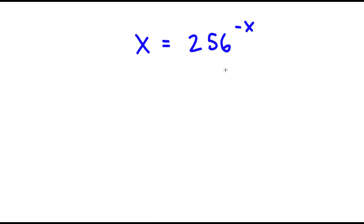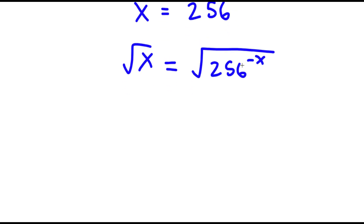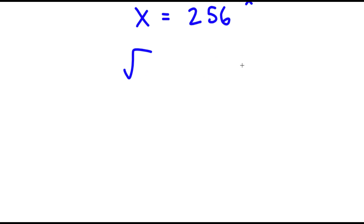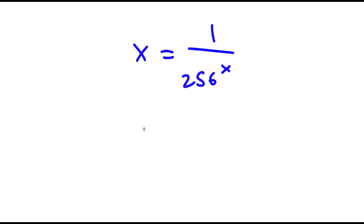So in this problem, I have x is equal to 256 to the power of negative x. To solve this, I'm going to start by rewriting 256 to the power of negative x as 1 over 256 to the power of x. So now I can multiply x with 256 to the power of negative x, and this is equal to 1.